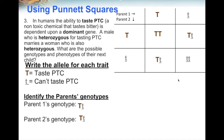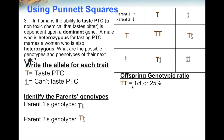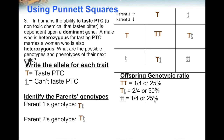Now figure out the genotype ratios of the offspring. There are three different genotypes: homozygous dominant (two capital Ts) equals one out of four boxes or 25% of the time. Heterozygous (capital T and lowercase t) equals two of the four boxes or 50% of the time. Homozygous recessive (two lowercase ts) equals one out of four boxes or 25% of the time.